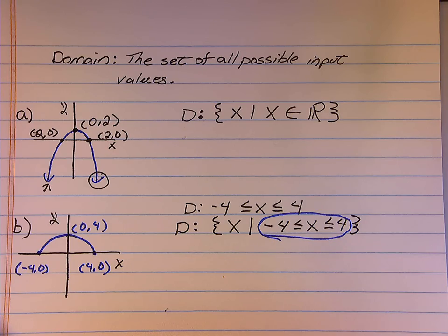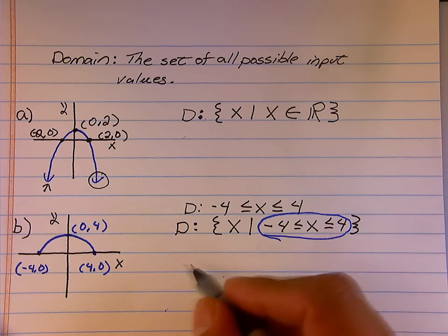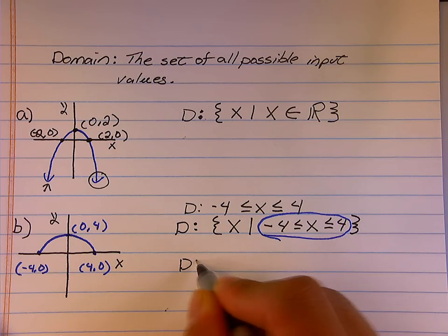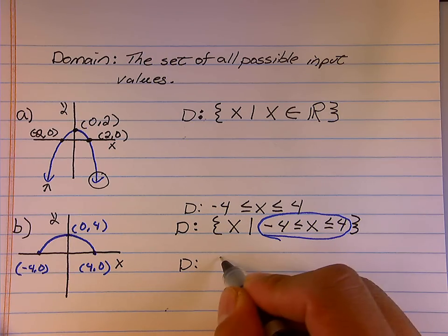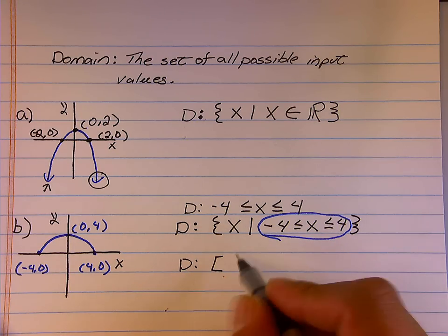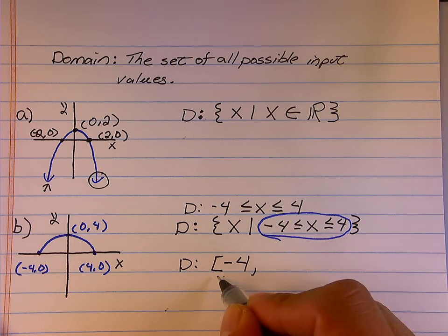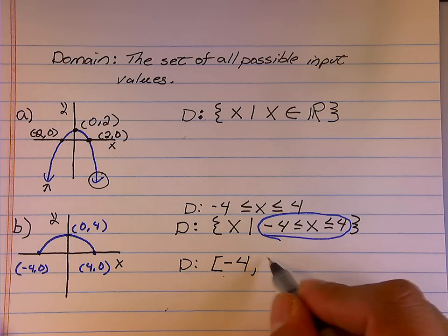Now, for the first exam, you are going to be required to write your answers in set notation. The other way that you've probably already learned how to describe domain is interval notation, where we could say the domain is between negative 4, and it's including it, so it's a bracket.